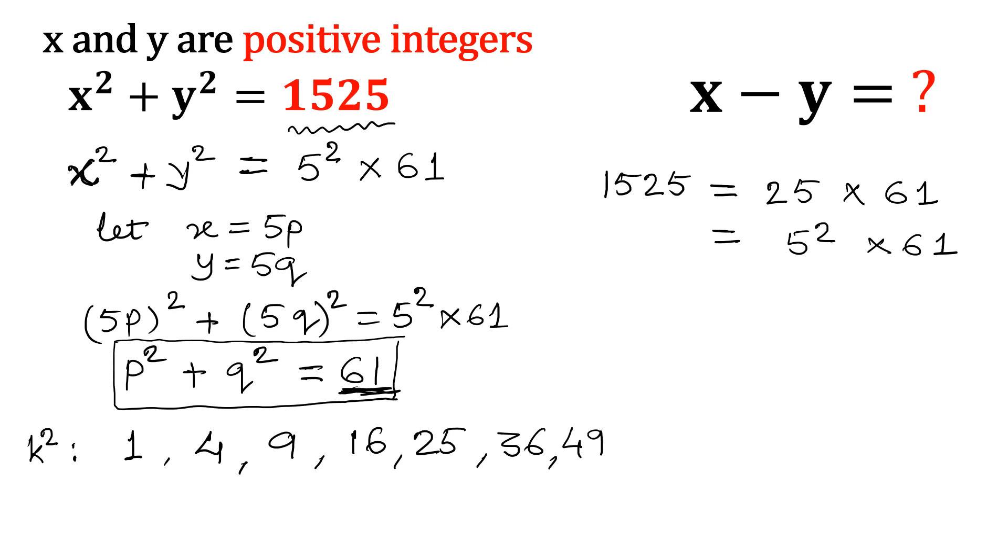Now I have to identify which 2 numbers addition will give me 61. So that is 25 and 36. If we conclude, then p is equal to 5, q is equal to 6, or p is equal to 6, q is equal to 5.